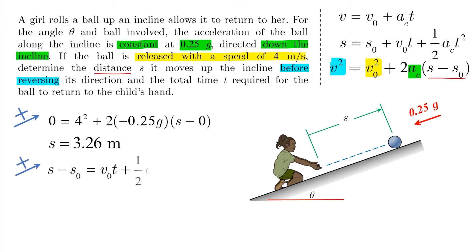Therefore, assuming same positive direction, s minus s₀ or delta s is equal to 0, v₀ is 4, and a is minus 0.25 g. The time is found to be 3.26 seconds.